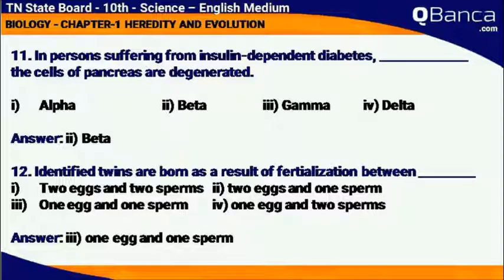In persons suffering from insulin-dependent diabetes, the beta cells of the pancreas are degenerated. Answer: beta.